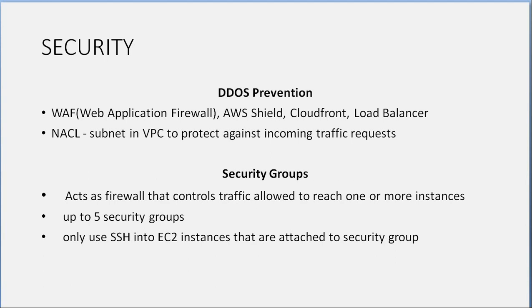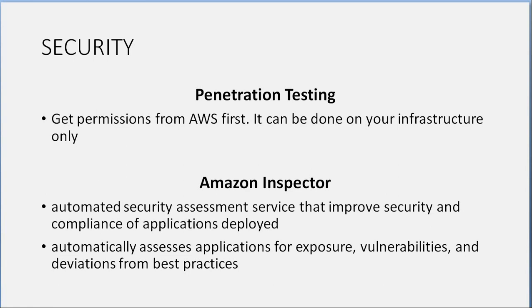Security groups act as firewalls that control traffic allowed to reach one or more instances — up to five security groups. Use SSH into EC2 instances attached to a security group. Penetration testing requires getting permissions from AWS first and can only be done on your own infrastructure. Amazon Inspector is an automated security assessment service that improves security and compliance of applications — it automatically assesses applications for exposure, vulnerabilities, and deviations from best practices.